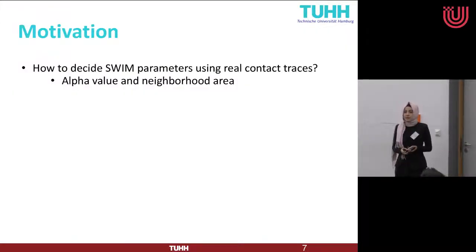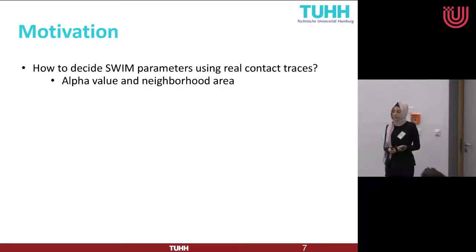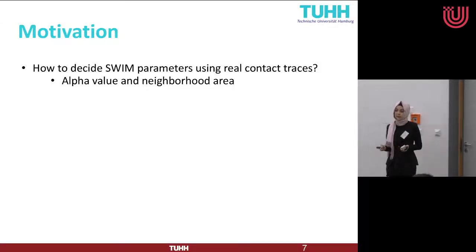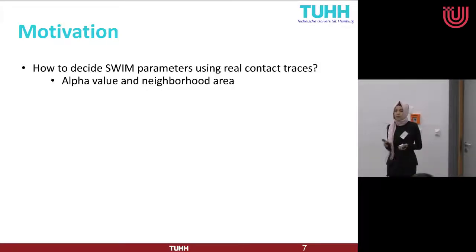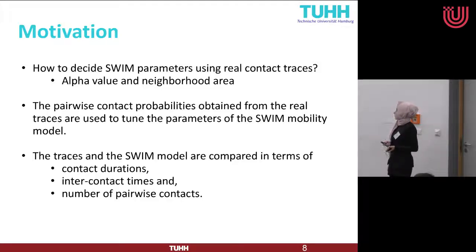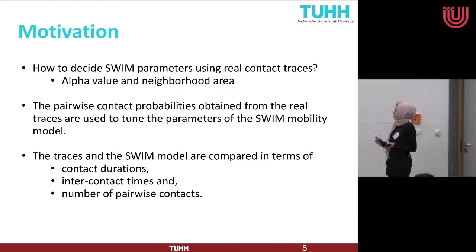Our motivation is that SWIM is a purely location-based model, and we want to decide SWIM parameters like alpha and neighborhood radius by evaluating them using real-life contact traces. From contact traces, we only get pairwise contact probabilities between two nodes, and we want to see how we can decide SWIM parameters based on that.